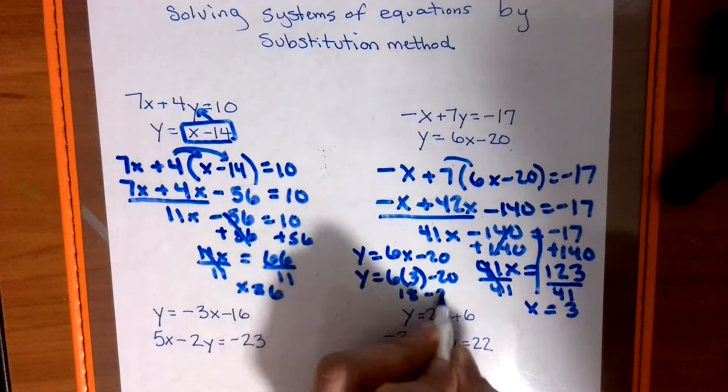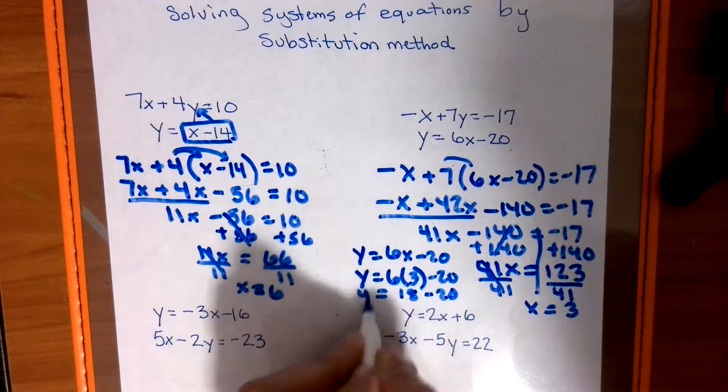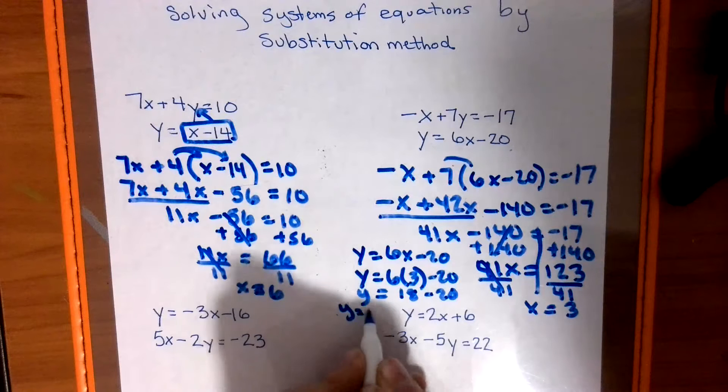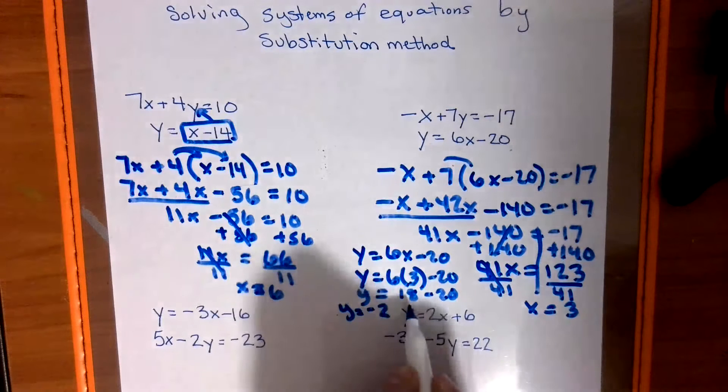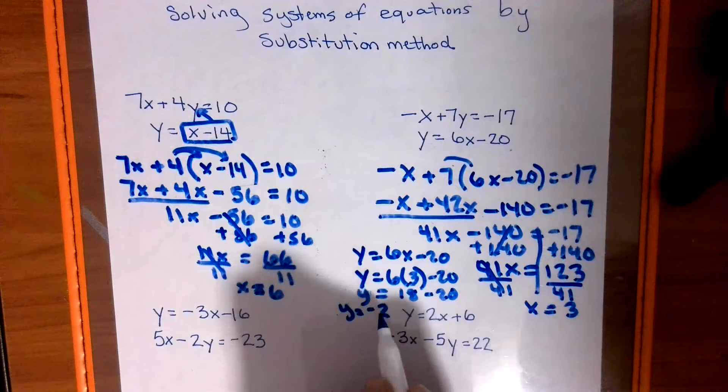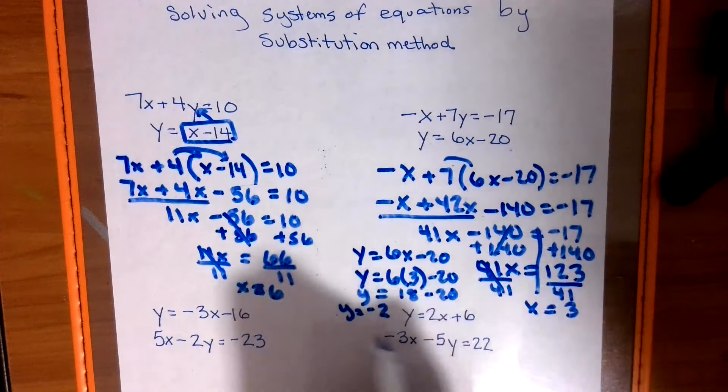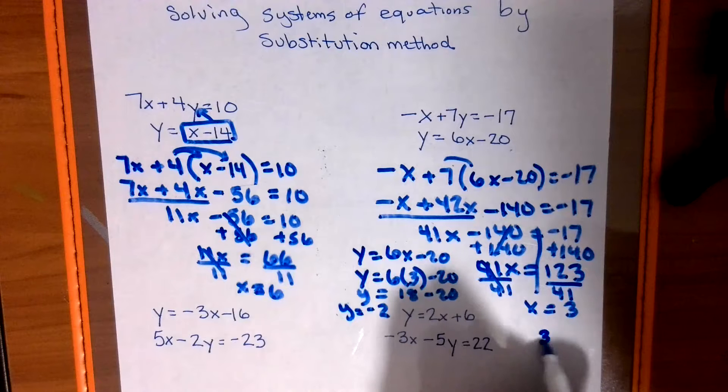6 times 3 minus 20. 18 minus 20. So y equals negative 2. 18 minus 20 is a negative 2. While some kids do keep, change, change, which is fine. And our coordinate pair is positive 3, negative 2.